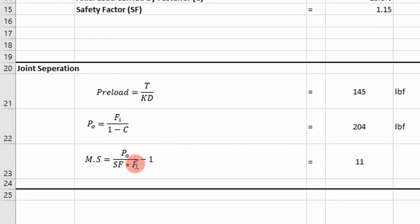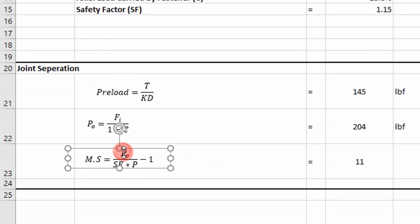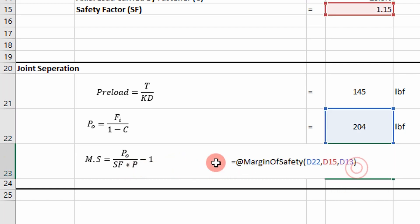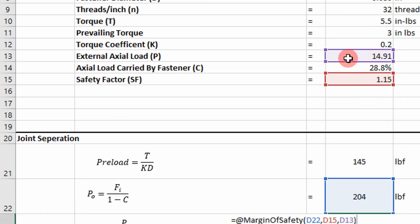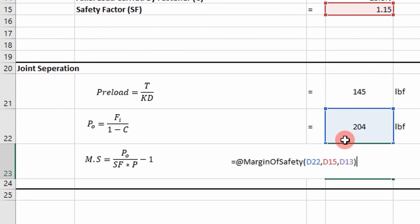So next we calculate a margin of safety, which is just going to be that value right here divided by the safety factor times the external load that you pull from your FEA minus one. So those are the inputs: external axial load, factor of safety, and then the external load required to overcome the preload force for the joint members.